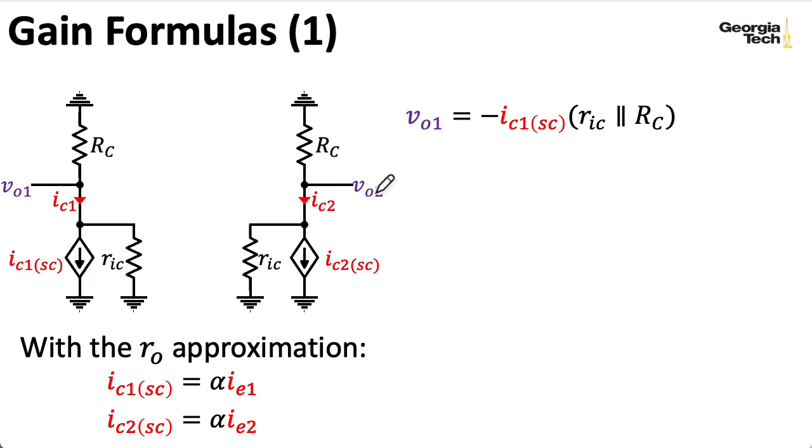Now, if I have IC1 SC here, I can multiply it by this parallel combination of RC and little RIC in order to get the voltage. The one thing I want to be careful with is to note that I do need a minus sign here because this is pulling current out of the node.